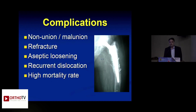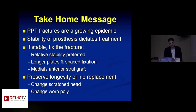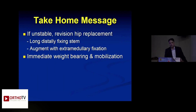Complications are high, so warn patients that these are not simple injuries. To summarize: periprosthetic fractures are a growing epidemic. The stability of the prosthesis dictates treatment — if the prosthesis is stable, fix it; if loose, revise it. Whatever you do, ensure the patient is mobilized early with immediate weight bearing.